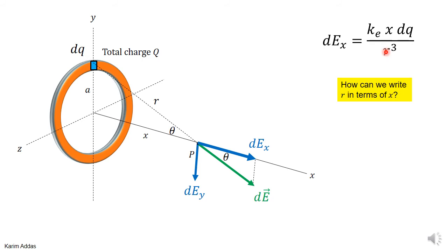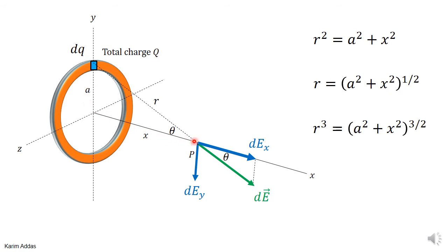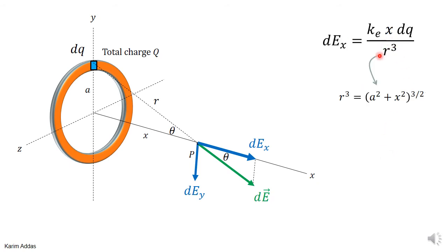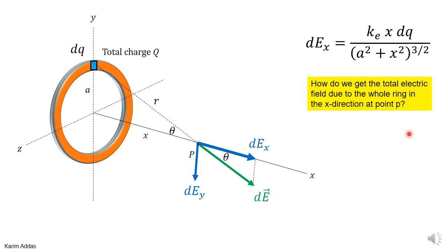Looking at the right-angle triangle again, the hypotenuse is r, one side is x, and the other is a. By Pythagoras' theorem, r² = a² + x², so r = (a² + x²)^(1/2), and r³ = (a² + x²)^(3/2). We replace r³ in the denominator, giving the final expression for the x-component of the electric field due to a single charge element dq: dEx = ke·dq·x / (a² + x²)^(3/2).